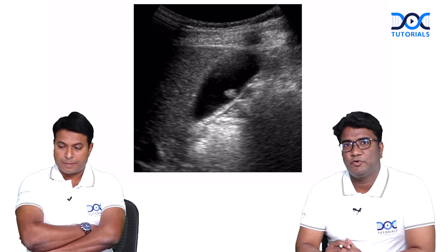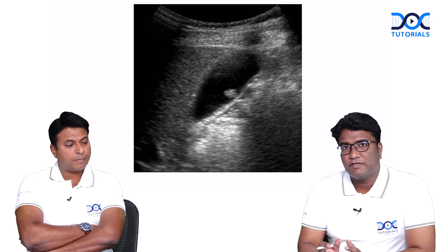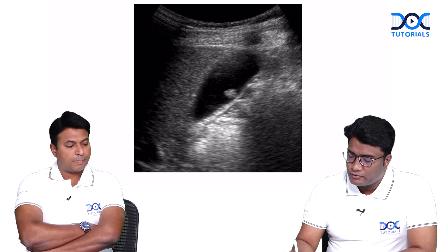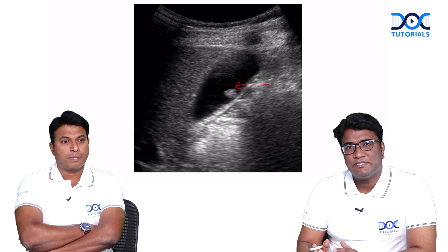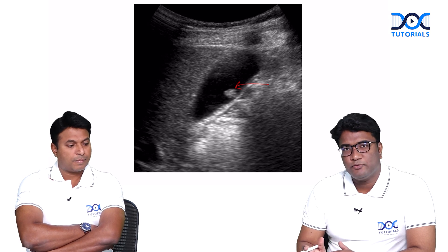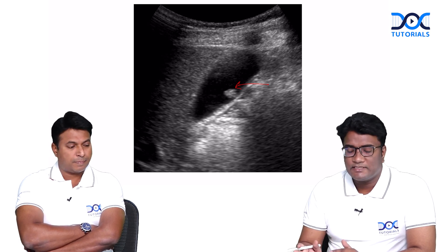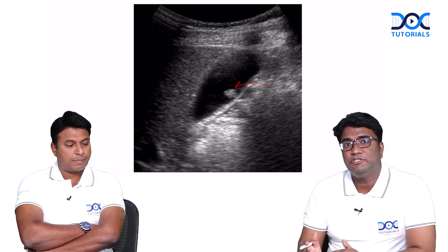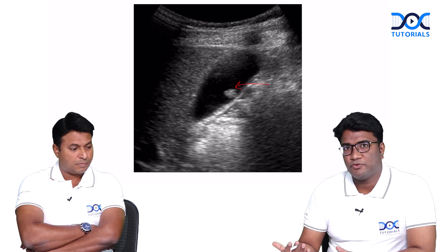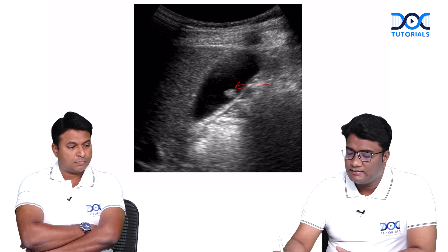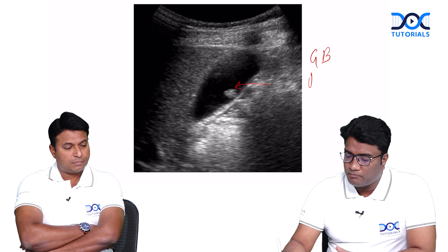What does this next image show? Within the lumen of the gallbladder you see a slightly hyperechoic area, but do you see a classic posterior acoustic shadow with it? No. This is how GB polyps appear — when you don't have the classic posterior acoustic shadowing, this is a GB polyp.